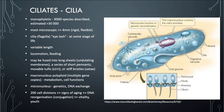Cilia may be fused into long sheets of undulating membranes, a series of short pennants, unmovable tufts called cirri, or stiff bristles called setae. What's really interesting is that ciliates have two types of nuclei: the macronucleus, which is larger, polyploid, and determines the cell's metabolism and cell functions; and the micronuclei, which are responsible for genetics and DNA exchange.